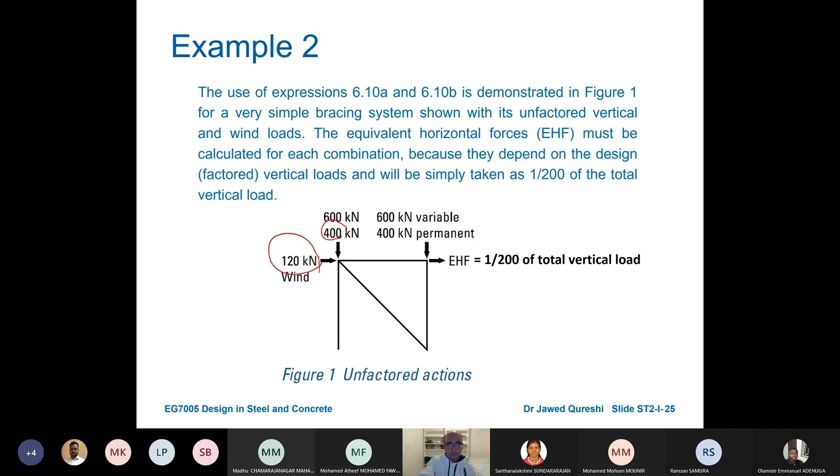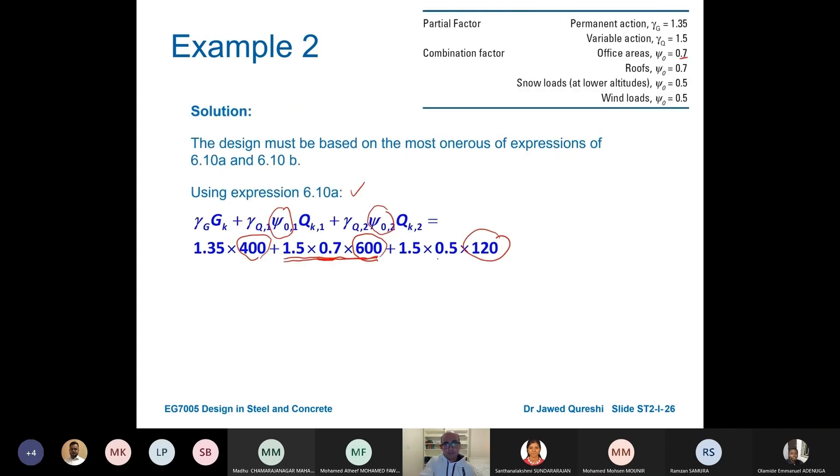The first one is related with the vertical load and the second one is related with the wind load. If I go back to the previous picture you can see that second one is wind, this psi factor for wind is 0.5. That's where it comes from and the psi factor for office area is 0.7.